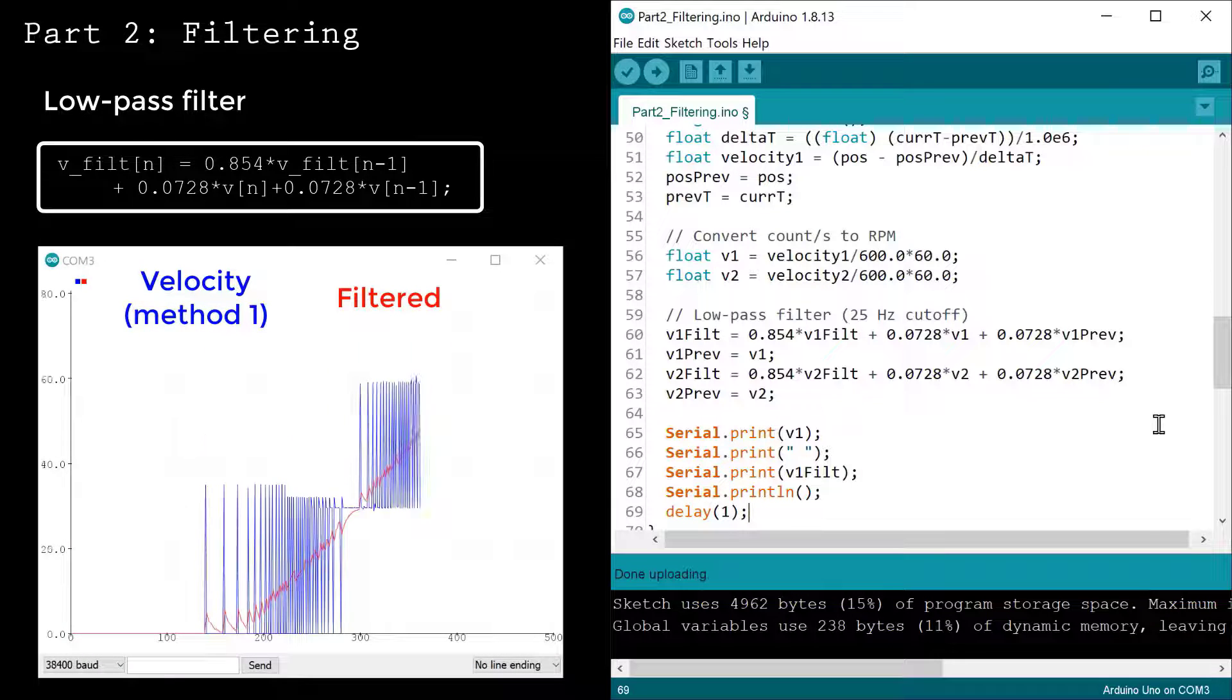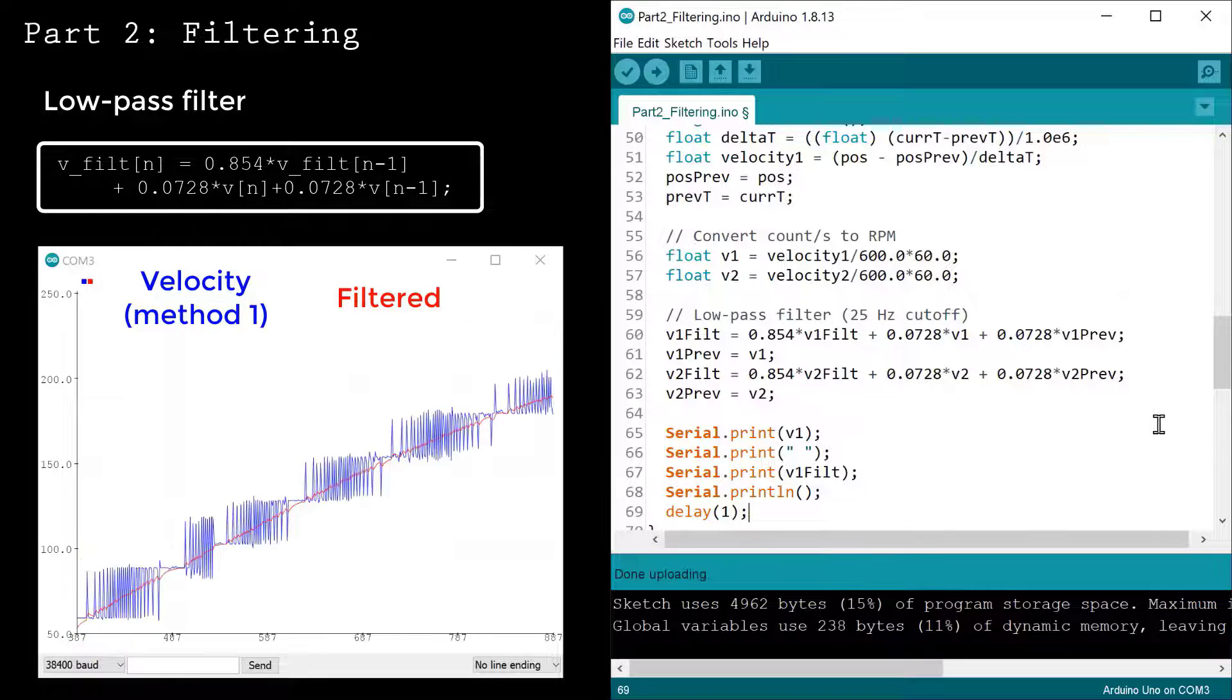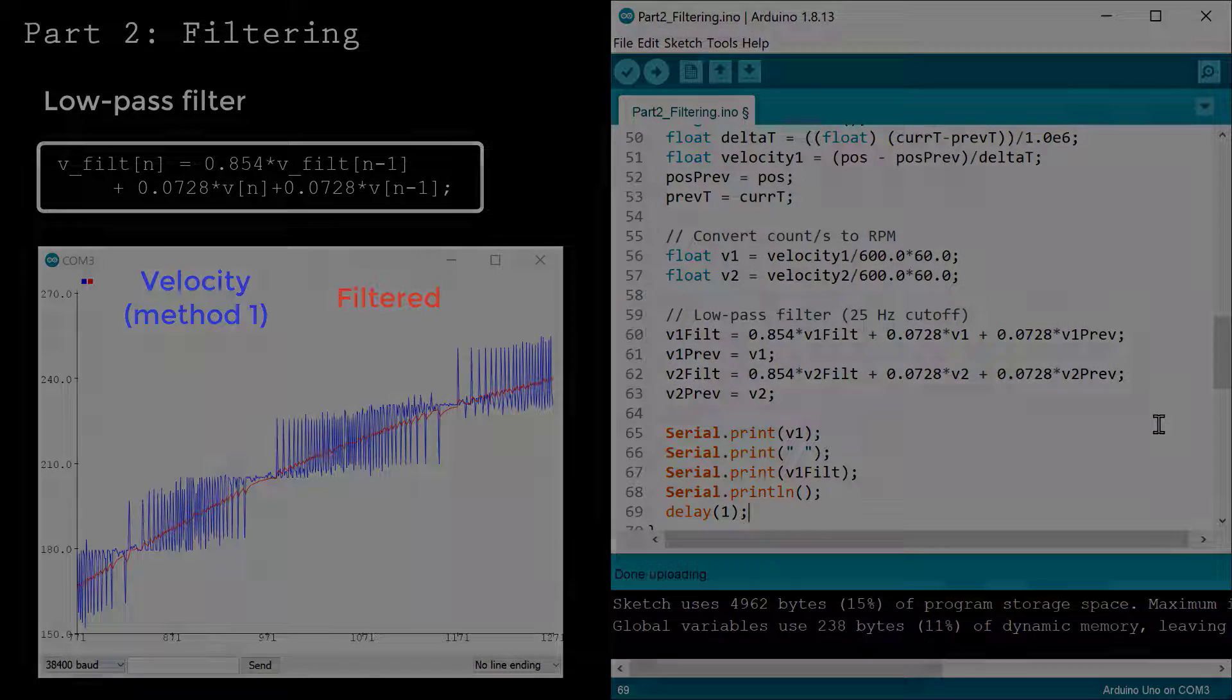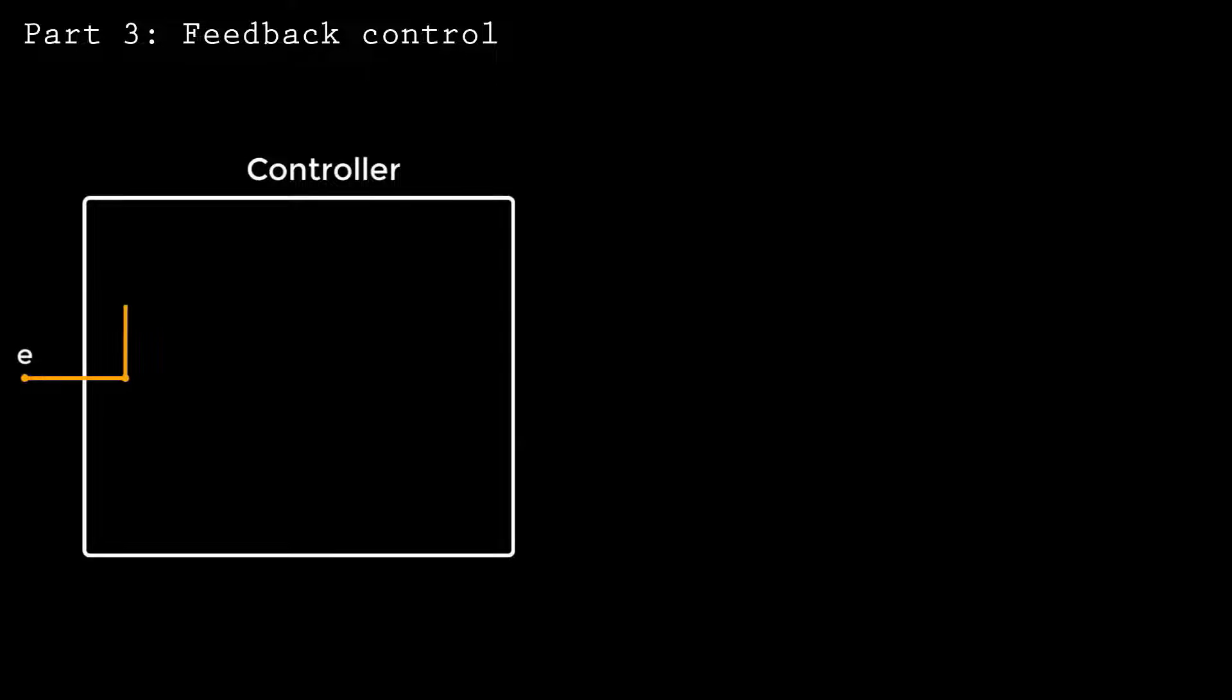Let's ramp the speed again to test our newly implemented filter. You can see that the filter has smoothed the jumps present in method 1. We'll use this filtered speed in our control loop. Now that we've tested the motor velocity measurements, we're ready to use a feedback loop to precisely control the speed.